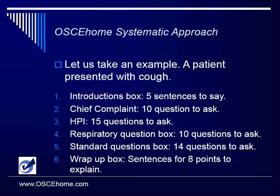Let us take an example to see how the station flow would go. A patient presents with a cough. Introductions box: five sentences to say, previously memorized and practiced. Chief complaint: 10 questions to ask, previously memorized — no need to worry about how or what to ask. Then the HPI box: 15 questions to ask. By now I know which organ-specific or system-specific box I am going to open. Here we determine it's a respiratory issue — not cardiac, not MSK, not GI, not psychiatric, not medication-induced. So I go into the respiratory box: 10 questions. Then standard questions: 14 questions. Then the wrap-up box: 8 points to explain with ready-made statements.